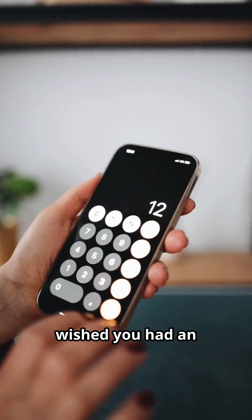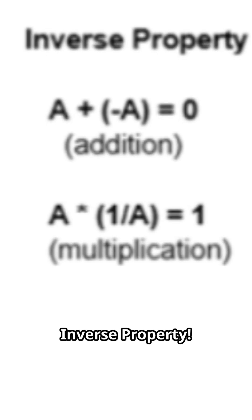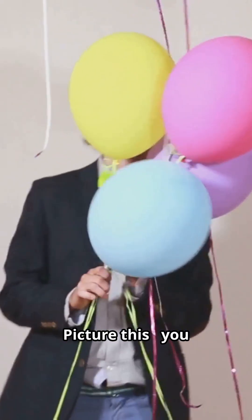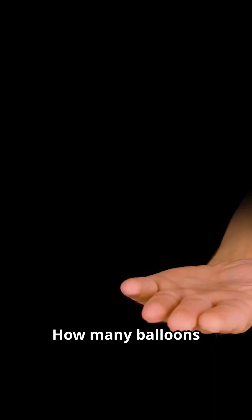Have you ever wished you had an undo button in real life? In math, you actually do. It's called the inverse property. Picture this. You have 7 balloons. But then, you let go of 7 balloons. How many balloons are you holding now? Zero.